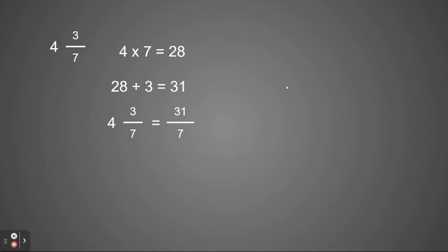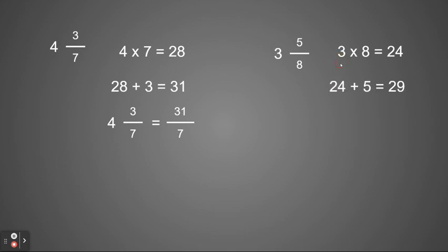Let's see one more example. If I have three and five eighths, I'm going to start by multiplying my denominator times my whole number — kind of put those together in your mind in a circle. Three times eight is twenty-four. Then I'm going to take that product and add it to my numerator. Twenty-four plus five equals twenty-nine. This new number, twenty-nine, is going to become my numerator. So three and five eighths is going to be equal to twenty-nine eighths.